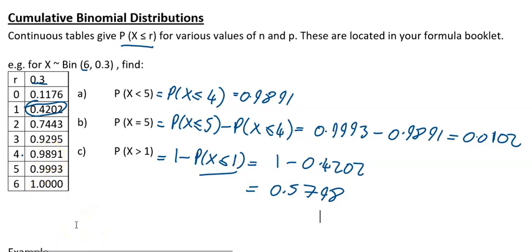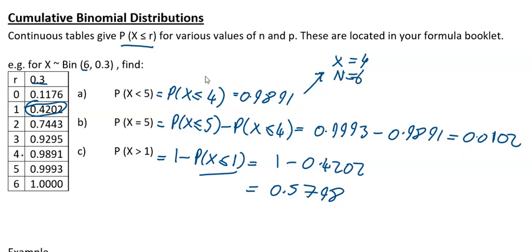Now here's how you could do these on your calculator. For P(X ≤ 4), go to mode, then 7, then select binomial CD, then choose variable. Enter x equals 4, n equals 6, and p equals 0.3. Press equals and you get 0.989065, which to four significant figures is 0.9891.